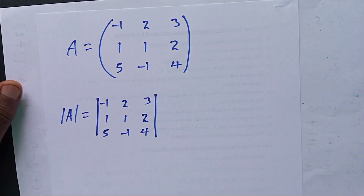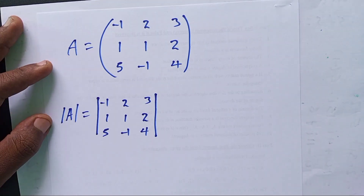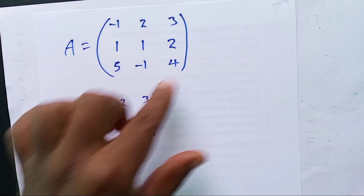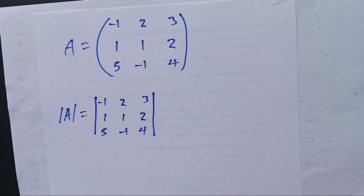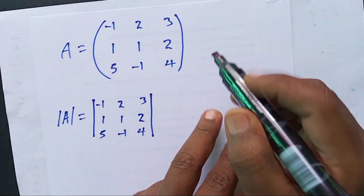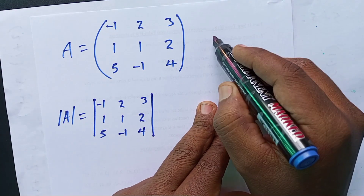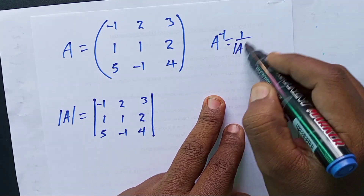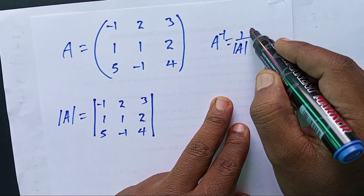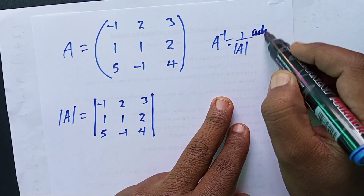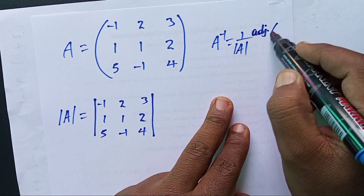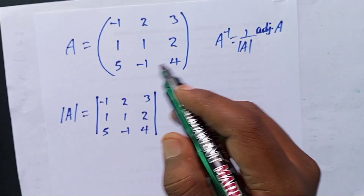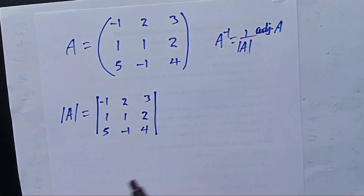Salam salam. Today we will look at the inverse of a matrix. The inverse of a given matrix is equal to one over the determinant of the matrix times the adjoint of that matrix. The adjoint is found using cofactors.